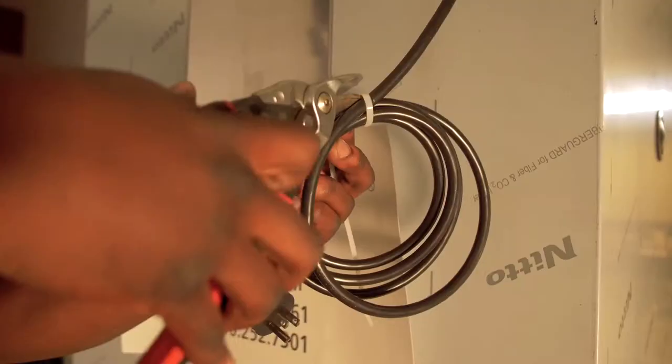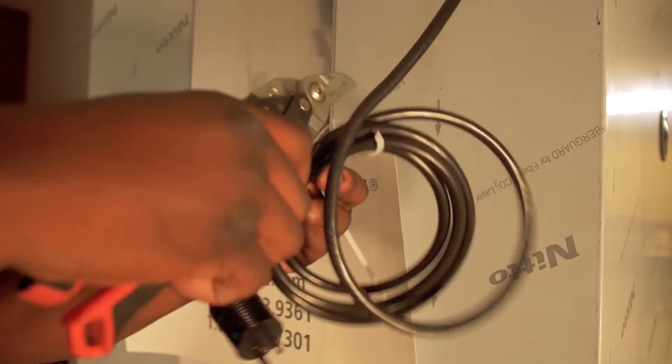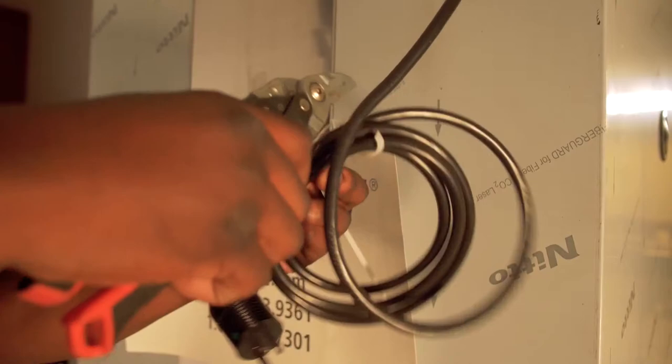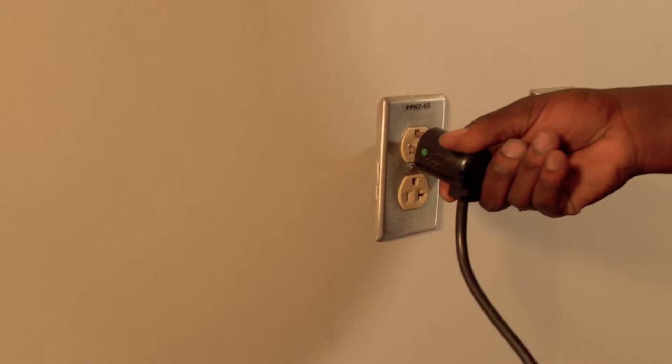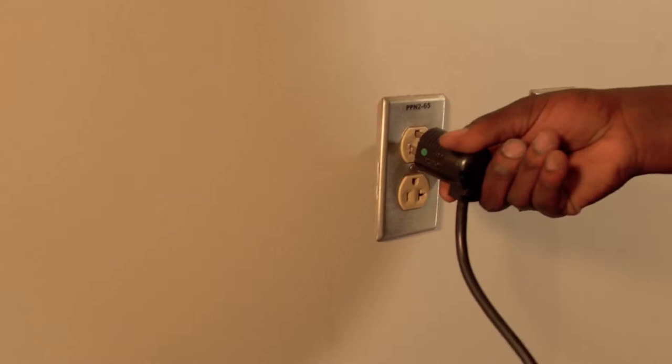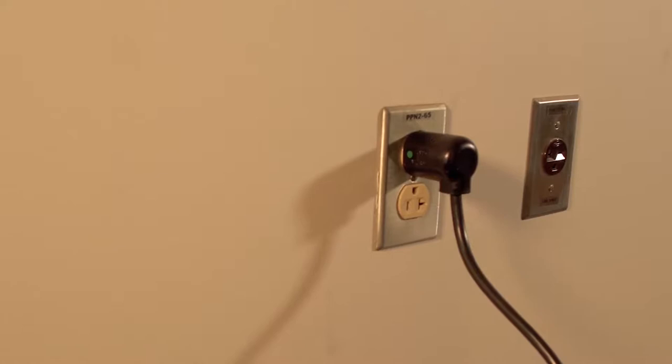Wheel the refrigerator into the installation footprint as directed by the site contact. Locate the power cable on the back of the unit, carefully cut the zip tie, and plug the power cable into the outlet within the installation footprint to confirm power of the refrigerator.